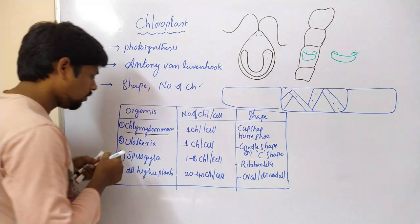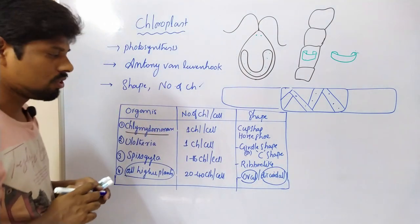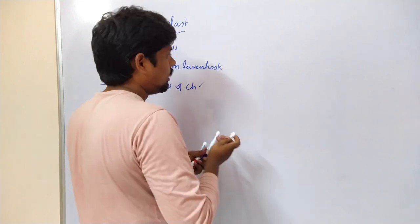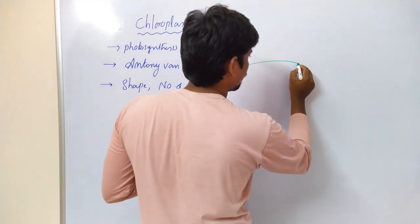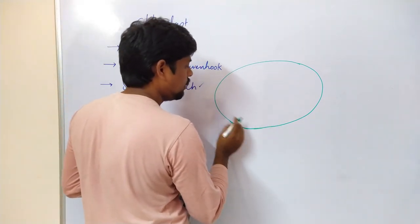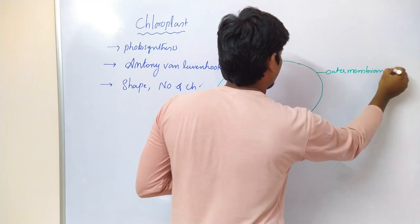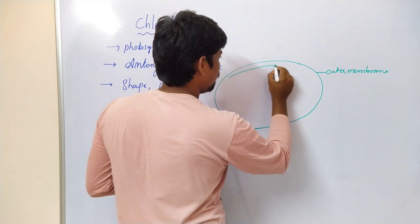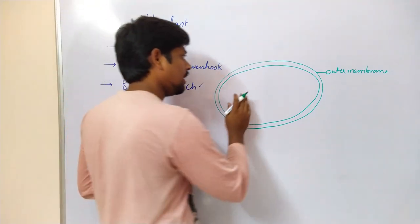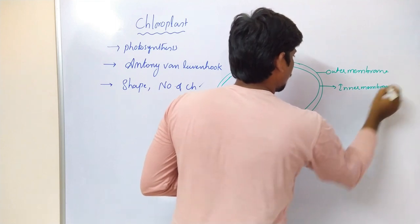Let us now look at our chloroplast - that is the higher plants - which contain the chloroplast in an oval or discoid shape. We have to see this shape in detail. Chloroplast has a double membrane structure. The outside membrane is called the outer membrane. The other membrane is called the inner membrane.